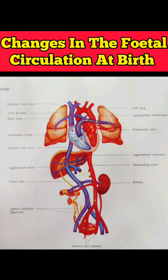Second, closure of ductus arteriosus. The functional closure of ductus arteriosus usually occurs soon after the establishment of pulmonary circulation, due to local increase in ductus arteriosus oxygen tension, which alters the ductus response to prostaglandins and causes marked localized vasoconstriction. Prostaglandin synthetase inhibitor, i.e. indomethacin, given to the mother may cause premature closure of ductus arteriosus, while prostaglandin may delay the closure.